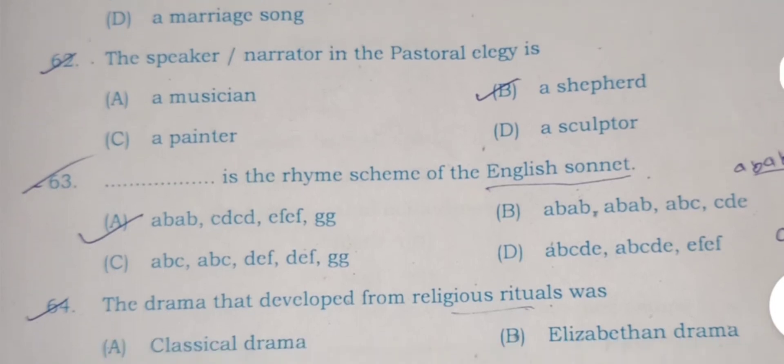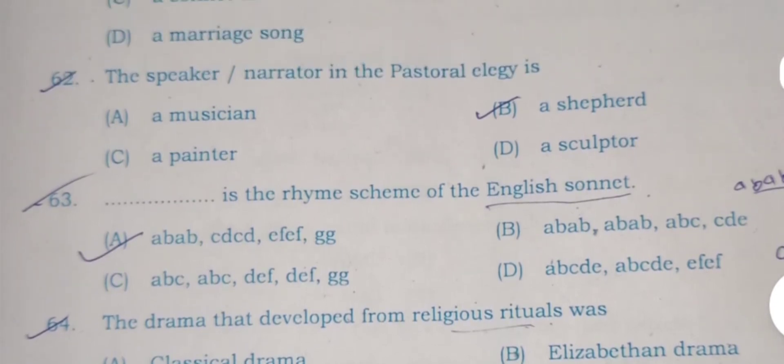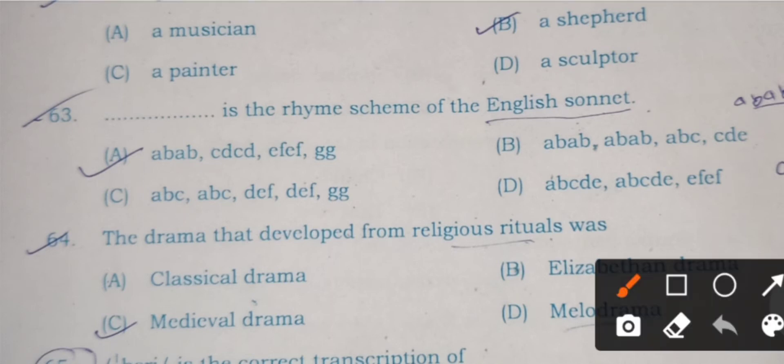One more elegy that you must remember from examination point of view is Elegy Written in a Country Churchyard, which was written by Thomas Gray in 1751. Marriage songs are also known as epithalamium, and one of the epithalamiums was written by Spenser in about 1580s. A poem written to celebrate a marriage is called epithalamium.